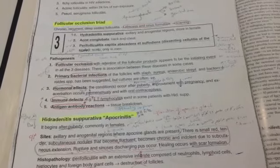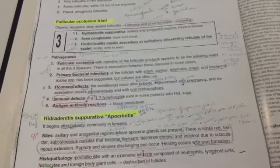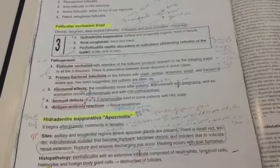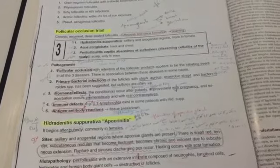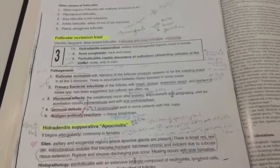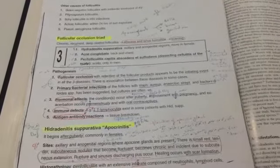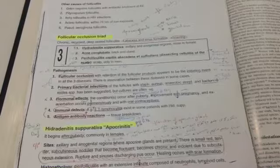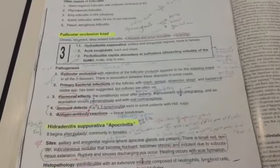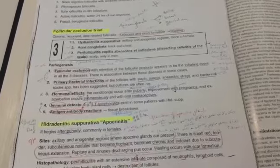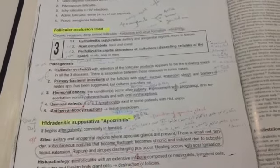Follicular occlusion triad: it's the chronic, recurrent, deep-seated folliculitis forming abscess and sinus formation and scarring. First, to give a hint on the apocrine glands: they are androgen-dependent after puberty, and they are present in axilla, breast, and genitalia. The follicular occlusion triad is a chronic, recurrent, deep-seated folliculitis forming abscess and sinus formation, leading to scarring.